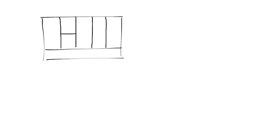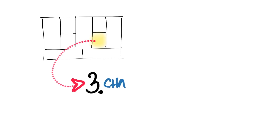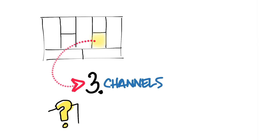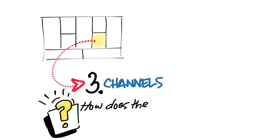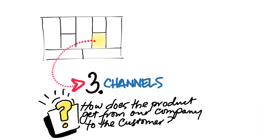Let's take a look at our business model canvas. Channels is just one of the nine boxes in the canvas, and it's a series of hypotheses about how our product gets from our company to our customer.